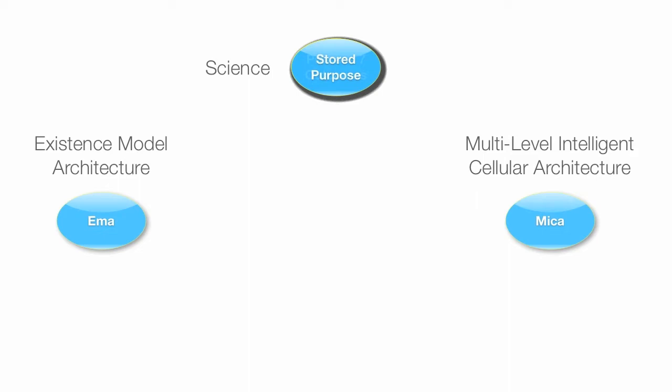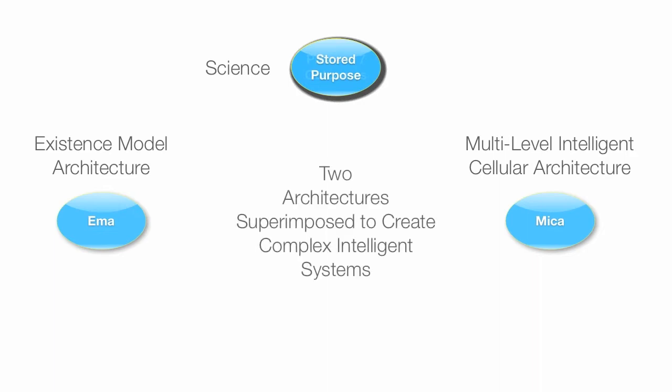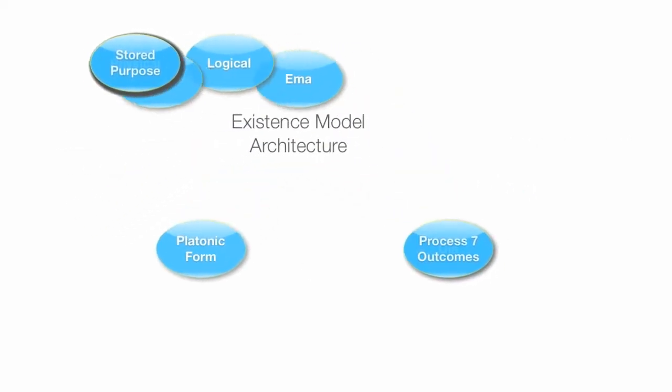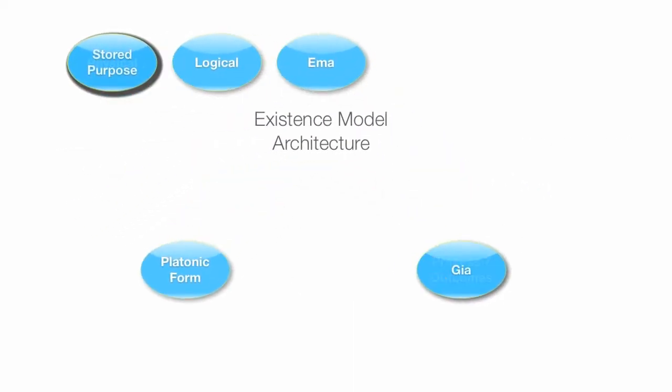And then, the multi-level intelligent cellular architecture that is MECA does allow simple functional intelligent entities based on EMA to become complex entities. And that occurs when we superimpose those two architectures, taking individual EMA elements and using those to create more complex entities.